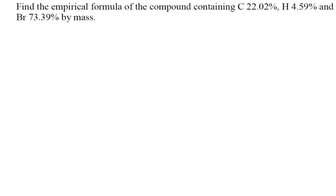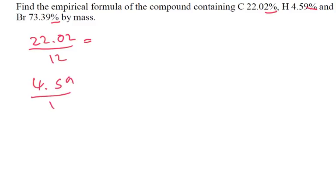Find the empirical formula of the compound containing 22.02% of carbon, 4.59% of hydrogen, and 73.39% by mass of bromine. So firstly, we're going to pretend again that these percents are grams and then work out how many moles we've got of each element. Carbon: 22.02 divided by 12. Hydrogen: 4.59 divided by 1, which is 4.59. Bromine: 73.39 divided by 80.